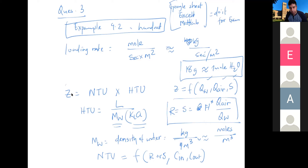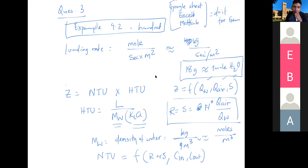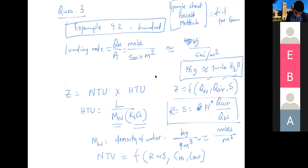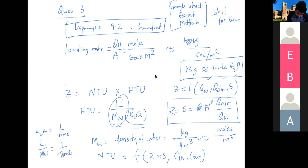A student asked: for the loading rate, can we use the water pumping rate divided by area? Yes — that's exactly it, flow rate divided by the cross-sectional area of the unit. Just make sure units cancel correctly. If kLa has units of inverse time (1/s), then L over mw must also have units of inverse time. As long as units are consistent, both approaches are equivalent.